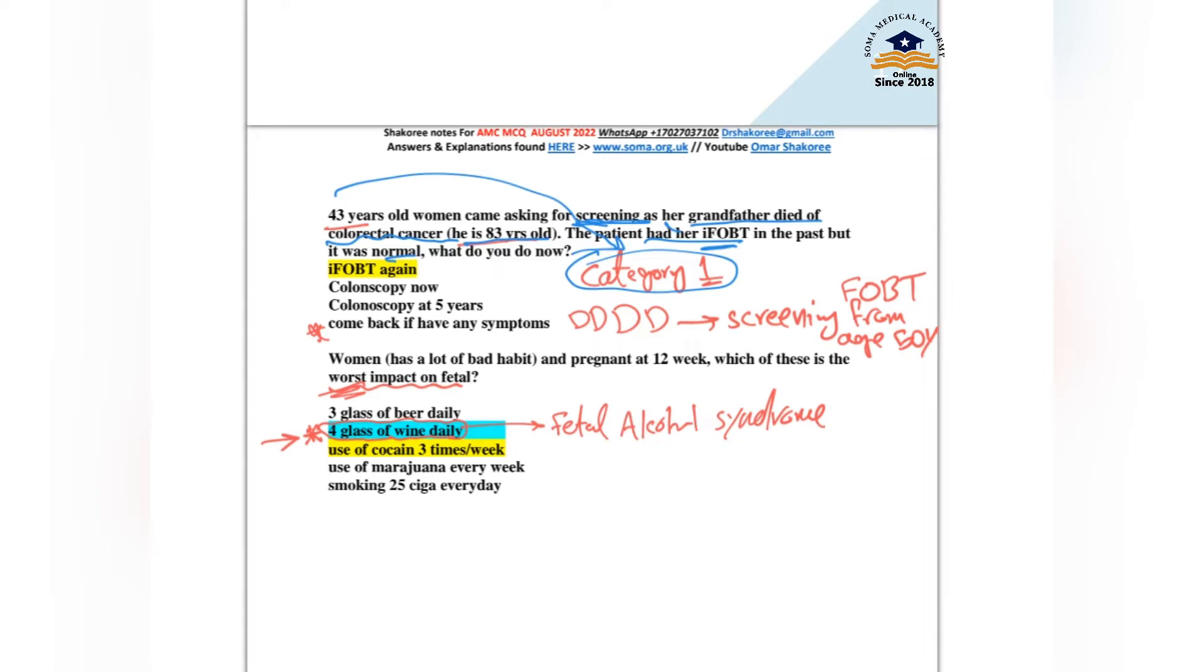So what to do now? She is 43. I will tell her FOBT will not be done, colonoscopy will not be done. I will tell her come back if any symptoms occur or after age of 50 for screening.